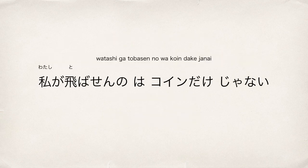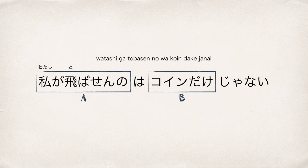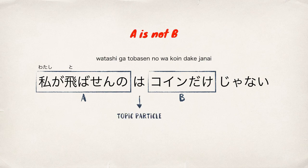Let's break down the first sentence: 私が飛ばせんのはコインだけじゃない。The sentence structure is AはBじゃない, which means 'A is not B.' は is the topic particle, which indicates A is the topic of the sentence, and じゃない is used to make a sentence negative.